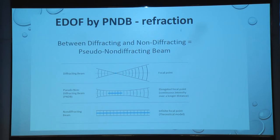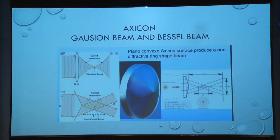Between diffracting and non-diffracting beams there is a pseudo non-diffracting beam. As we can see, a diffracting beam from distance is focused at a single focus and then gets diffracted again. In a pseudo non-diffractive beam, instead of being diffracted from a single point it is diffracted from an elongated focus, giving an elongated depth of focus — theoretically, light from an infinite distance gives infinite focal points. In the Lucidis lens there is an axicon-type lens where Gaussian beams are refracted, creating a Bessel beam giving an elongated depth of focus on the principle of Sturm's conoid.